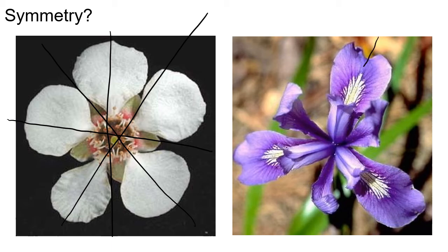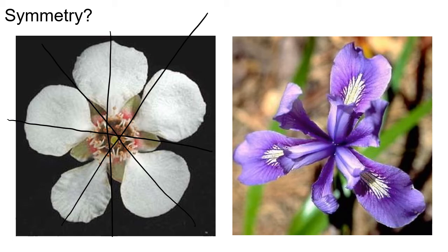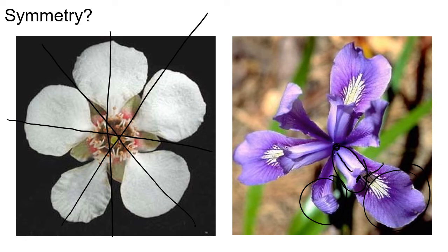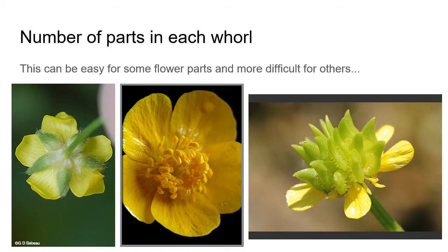This iris is an interesting example where the location of structures tells you what they are. These are the sepals, these are the petals, the stamens are tucked within. The carpel is visible here — you can see the style, and the stigma sticking out at the bottom, with the ovary at the base. Because it's the innermost whorl, it's the gynoecium.